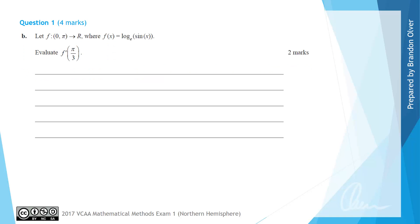For part B, we have the function with domain 0 to π, where f has the rule log_e(sin(x)), and we're asked to evaluate the derivative when x = π/3. Inspecting f(x), we can see it's a function inside a function, so we'll need to use the chain rule to differentiate.